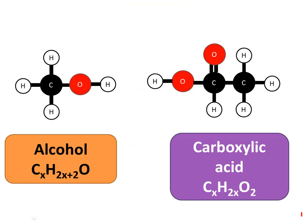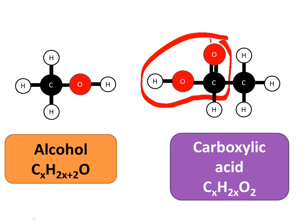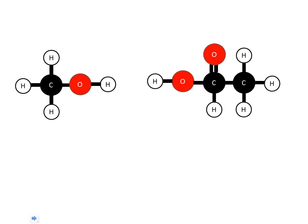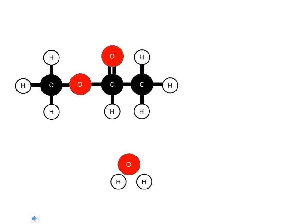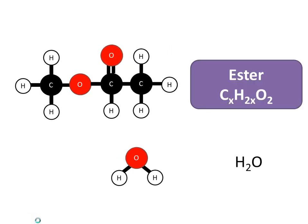Let's watch this. We have the alcohol with its functional group OH, and the carboxylic acid with its functional group COOH. As they react with one another, the bonds break, water comes out, and then the two main parts join together. We end with the ester and the water.